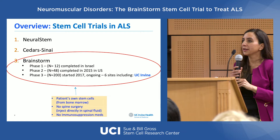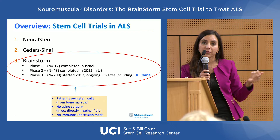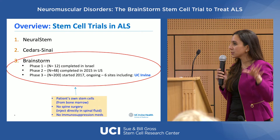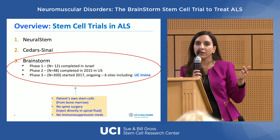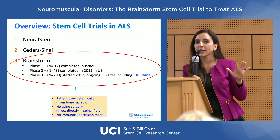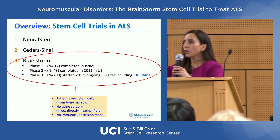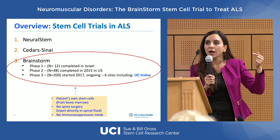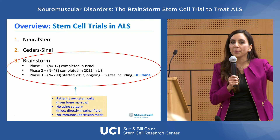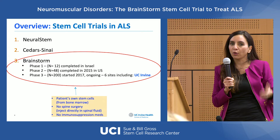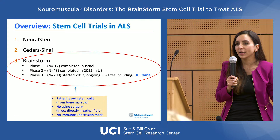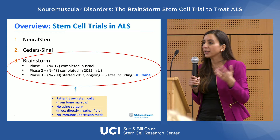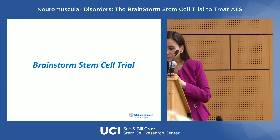BrainStorm then did a phase two study in 48 patients. They found that stem cell delivery was not only safe but may be effective in slowing down ALS progression. The FDA then approved moving on to a phase three study, which is only being done in the US at six centers. What's different about this study compared to the other two trials is that it uses the patient's own stem cells — taken from the patient's own bone marrow. Because of that, it's not considered an organ transplant and patients don't need immunosuppression, avoiding the risk of chemotherapy-type side effects.